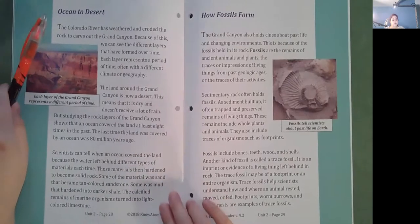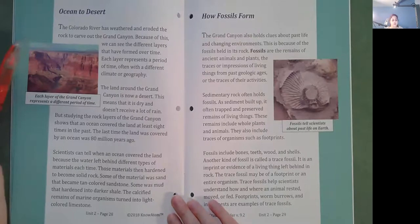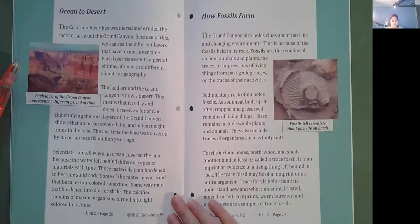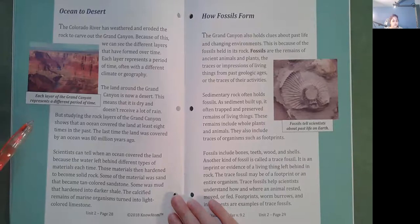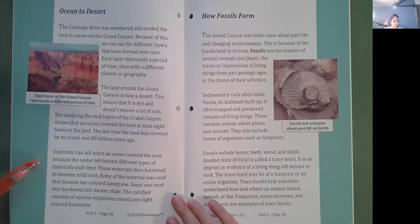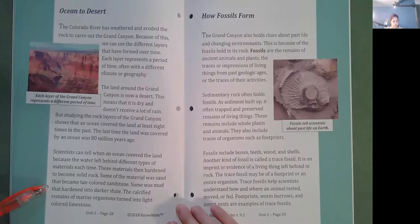Ocean to desert. The Colorado River has weathered and eroded the rock to carve out the Grand Canyon. Because of this, we can see the different layers that have formed over time. Each layer represents a period of time, often with a different climate or geography. The land around the Grand Canyon is now a desert. This means that it is dry and doesn't receive a lot of rain. But studying the rock layers of the Grand Canyon showed that an ocean covered the land at least eight times in the past. The last time the land was covered by an ocean was 80 million years ago. Scientists can tell when an ocean covered the land because the water left behind different types of materials each time. Those materials then hardened to become solid rock. Some of the material was sand that became tan colored sandstone. Some was mud that hardened into darker shale. The calcified remains of marine organisms turned into light colored limestone.